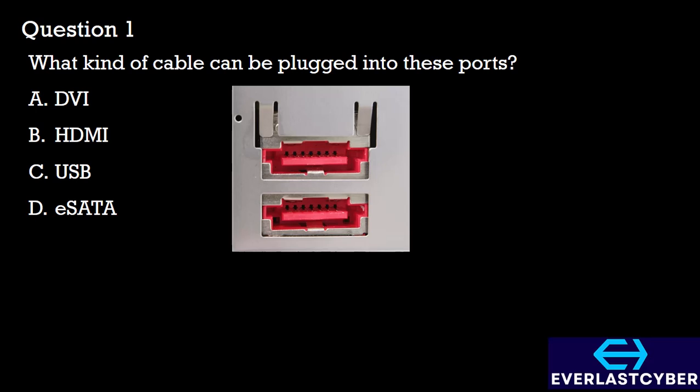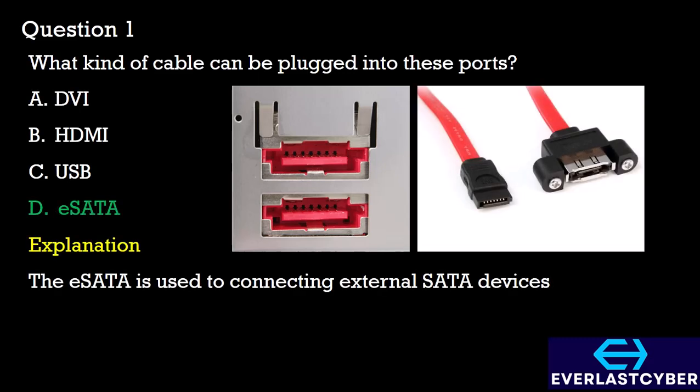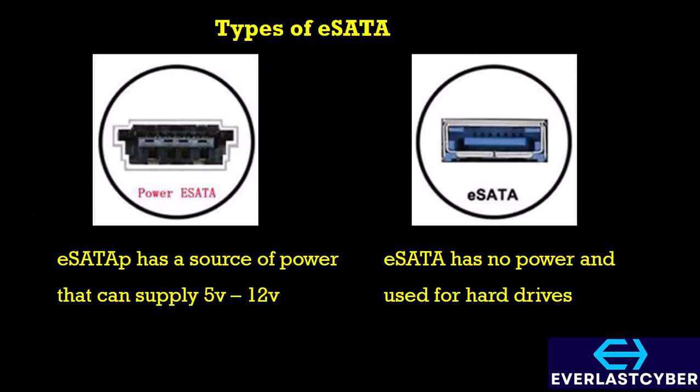Question 1: What kind of cable can be plugged into these ports? A. DVI, B. HDMI, C. USB, D. eSATA. For this kind of port, the answer is Option D, the eSATA cable. The eSATA cable is used to connect external SATA devices like hard disk drives, solid state drives, optical drives, and other external storage devices. There are two versions of this port: the standard eSATA and the eSATA-P, which is a powered one. The eSATA-P can supply about 5V to 12V, while the eSATA has no power and is usually used for hard drives.